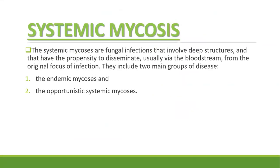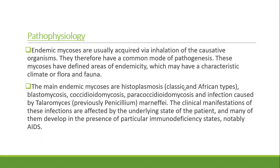Systemic mycoses are the fungal infections that involve deep structures and have the propensity to disseminate, usually via the bloodstream from the original focus of infection. They include mainly two groups of diseases: the endemic mycoses and the opportunistic systemic mycoses. The endemic mycoses are usually acquired via inhalation of the causative organism and have a common mode of pathogenesis, with defined areas of endemicity which may have characteristic climate, flora, and fauna.